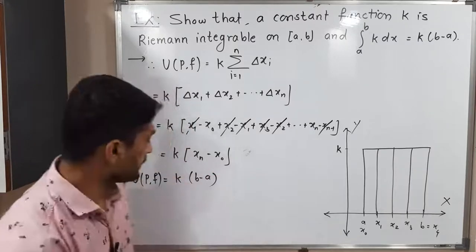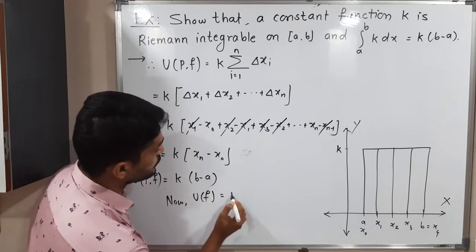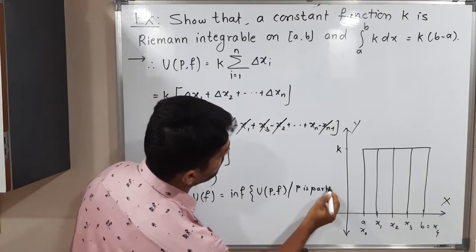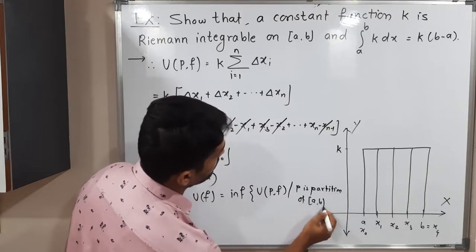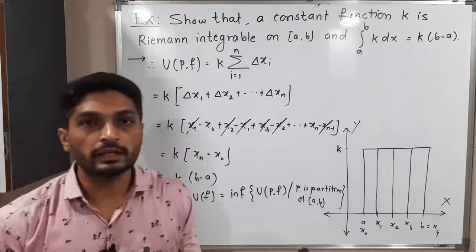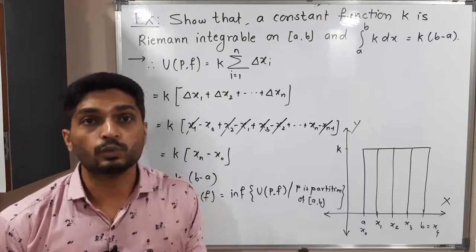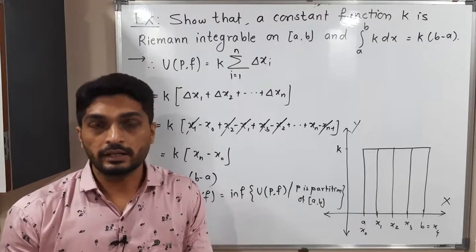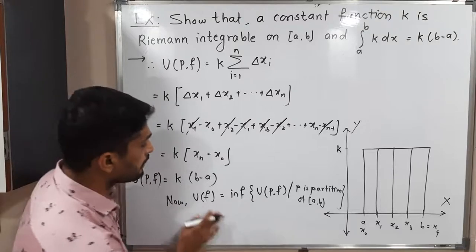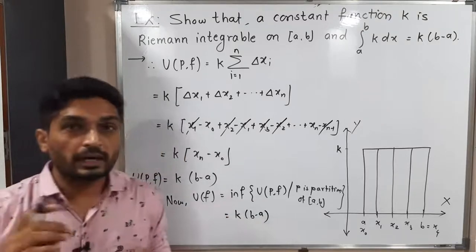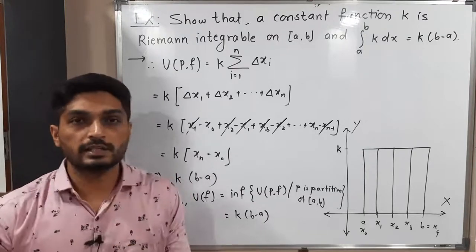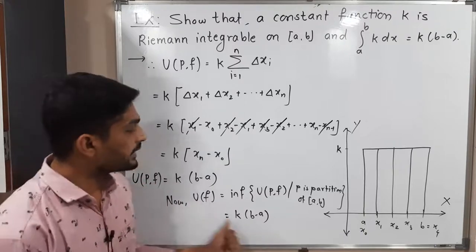Now we find the upper integral U(f), defined as the infimum of U(P, f) over all partitions P of [a, b]. In this case, we took an arbitrary partition and always obtained the value k(b − a). Since k, b, and a are all constants, the result is independent of the partition. Therefore the infimum is also k(b − a). So the upper integral equals k(b − a).